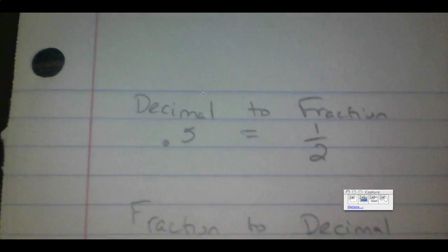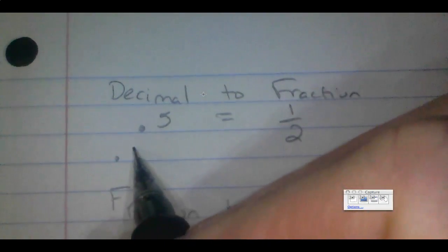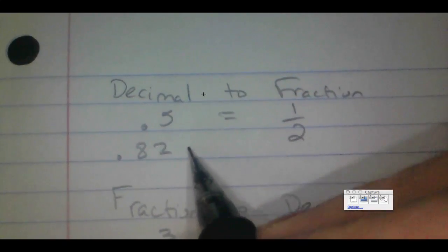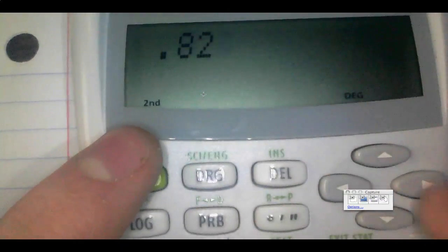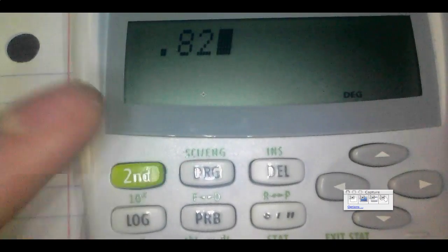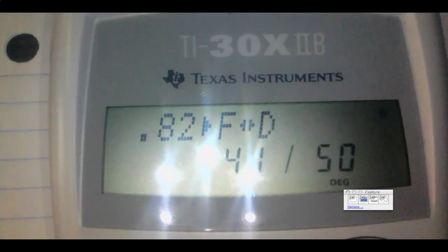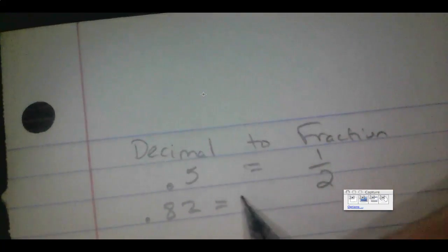You can do other decimals the same way. For example, let's try 0.82. Type in 0.82, press Second and the PRB button so that F→D pops up, and we get an answer of 41 over 50. That's how we go from a decimal to a fraction.